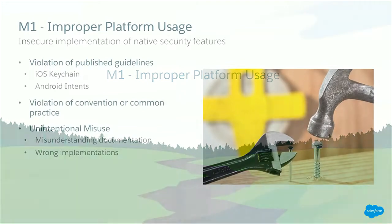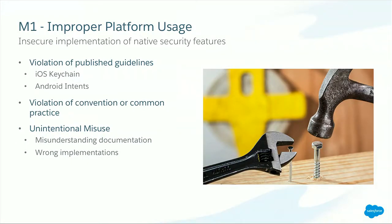The first one is improper platform usage — insecure implementation of native security features within the platform you're building on. A common issue is violation of published guidelines. For example, Apple recommends using the iOS keychain to store sensitive data, but developers often accidentally use local app storage instead. If a user does an iTunes backup, that data gets stored unencrypted. Another issue is unintentional misuse: platforms are constantly changing with new Android and iOS versions, so you've got to stay up to date on documentation, since security class behavior may change between versions.